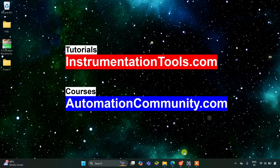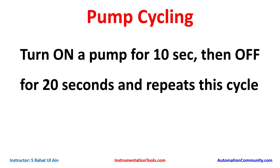Hello everyone, welcome to Automation Community. Today in this video we are going to discuss an example about pump cycling: turn on a pump for 10 seconds, then off for 20 seconds, and repeat this cycle. That means the pump will turn on for 10 seconds, remain off for 20 seconds, then again 10 seconds on, 20 seconds off, and so on.